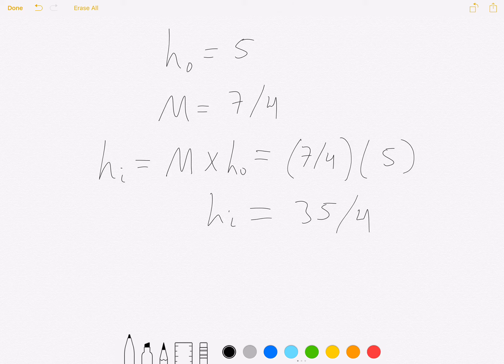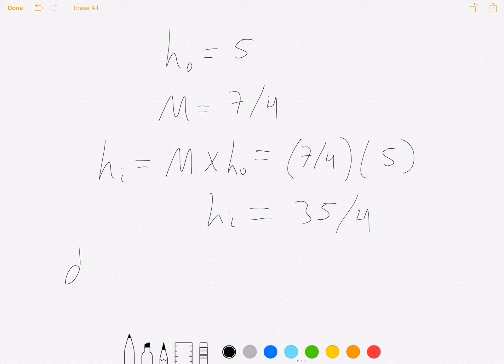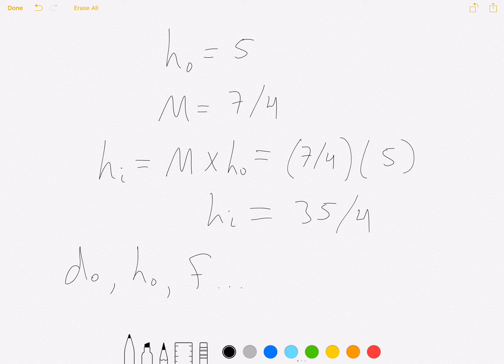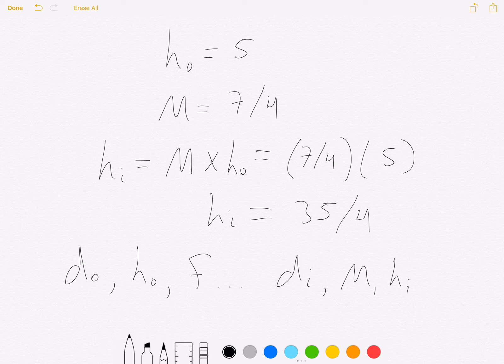All right, so we started off with object distance, object height, and the focal length, and we were able to turn that into an image distance, a magnification, and an image height. So that concludes the tutorial on how to use the thin lens equation with some bonus information about the magnification equation. Good luck with your algebra.